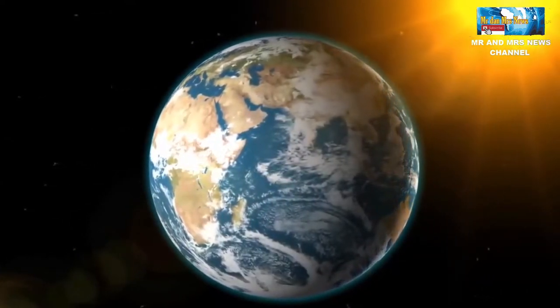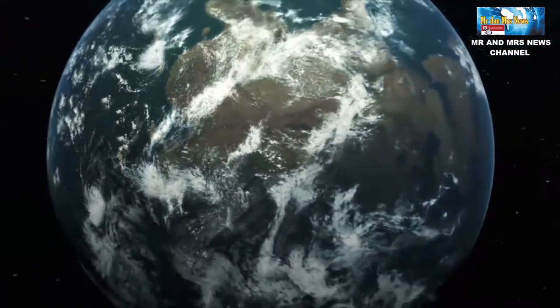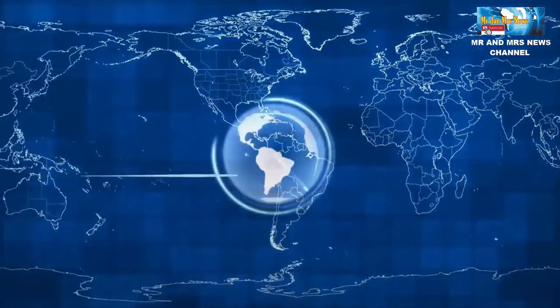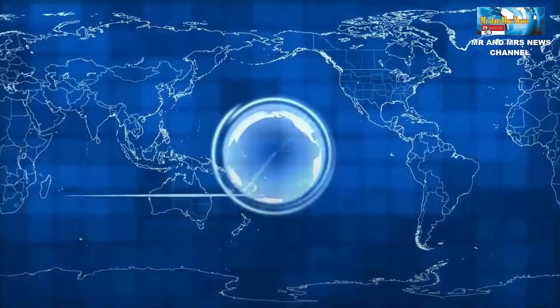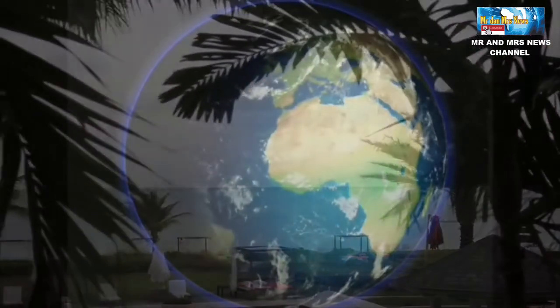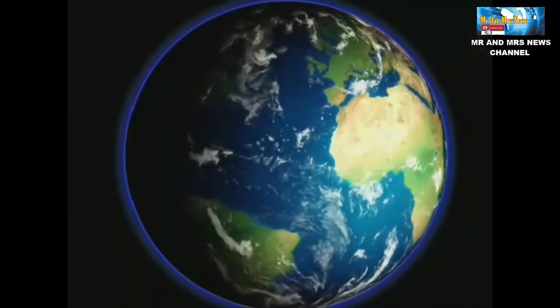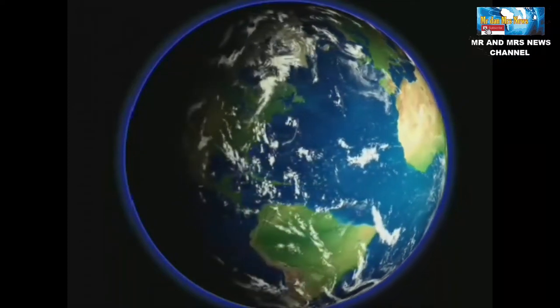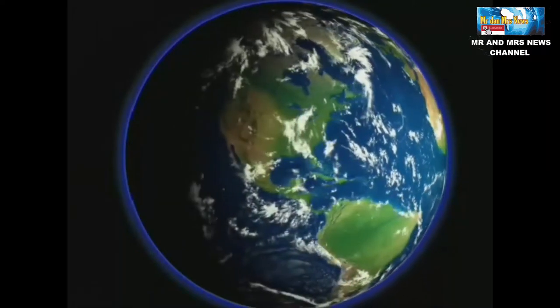Putaran yang semakin cepat dapat berdampak pada satelit GPS serta sistem komunikasi di planet ini. Bumi mencatat hari terpendek dalam hidupnya pada 29 Juli ketika menyelesaikan putaran penuh dalam 1,59 milidetik kurang dari rotasi 24 jam standarnya. Menurut sebuah laporan oleh independent, itu hampir memecahkan penghalang lagi bulan ini dengan 26 Juli menjadi 1,50 milidetik lebih pendek dari 24 jam.